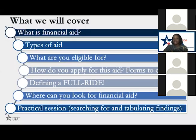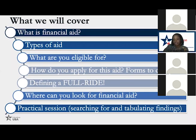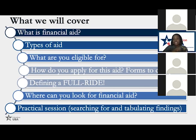We'll be talking about types of financial aid, what you're eligible for as an international student, how you apply for aid, and I'll briefly cover the different forms. Then I'll define what a full ride scholarship means — not just full tuition but a full ride — where you can look for financial aid, and then we'll do a practical walkthrough to understand how to actually research financial aid.